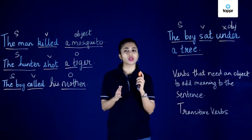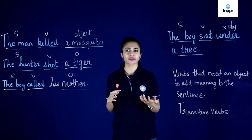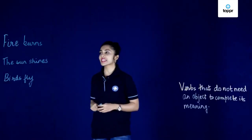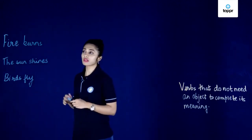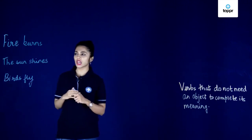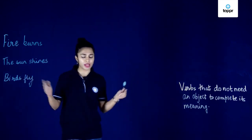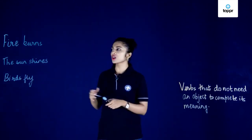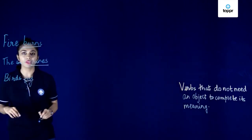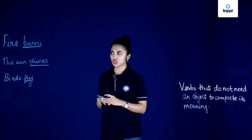So now we know what transitive verbs are — they are verbs that need an object. Then what are intransitive verbs? To understand intransitive verbs better, let us look at these examples. The first example is 'the fire burns,' the second is 'the sun shines,' and the third is 'birds fly.' These verbs — burn, shine, and fly — do not need anything else to add meaning to them. They are independent.